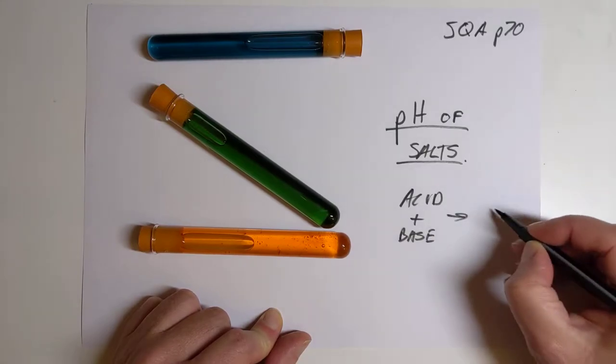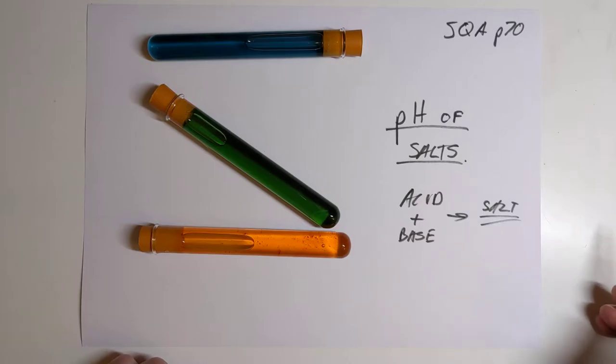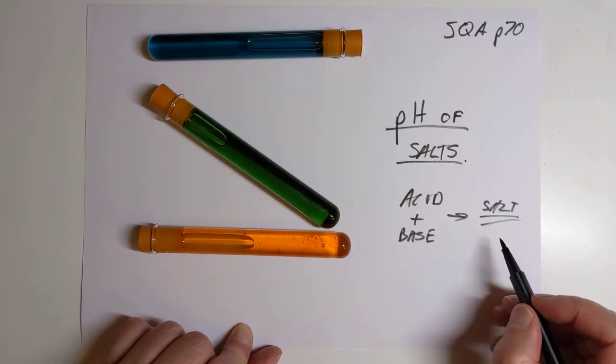So acid plus base makes a salt. It often makes something else as well, but we're only really interested in this today. Now, back at National 5, we were just dealing with normal acids and normal bases. I should of course say strong acids and strong bases. There was one example that wasn't strong and that was ammonia, but we never worried about the pH of these salts and people just assumed that they were neutral.